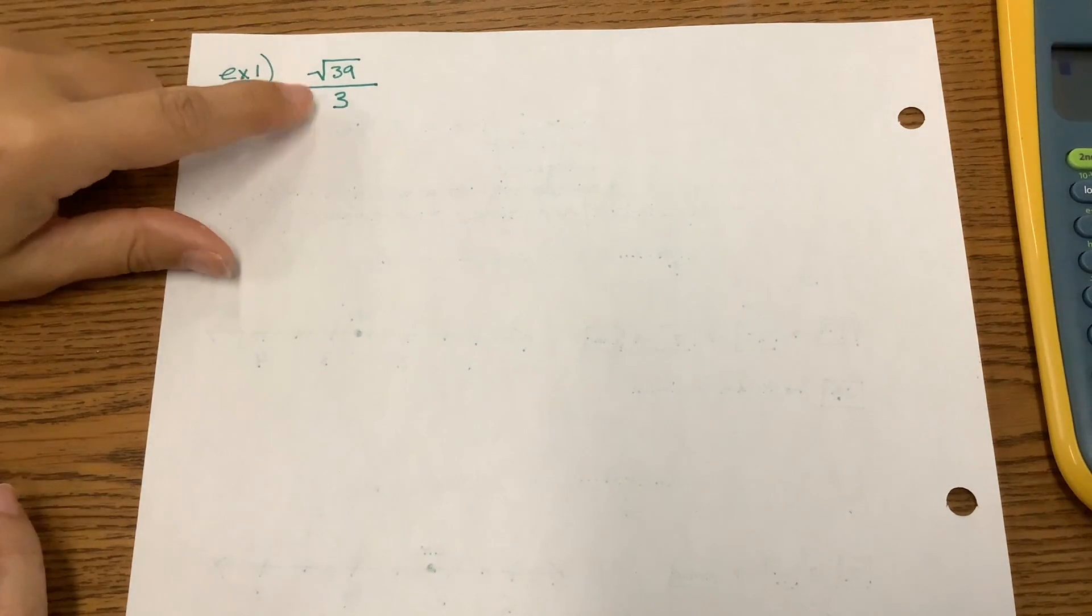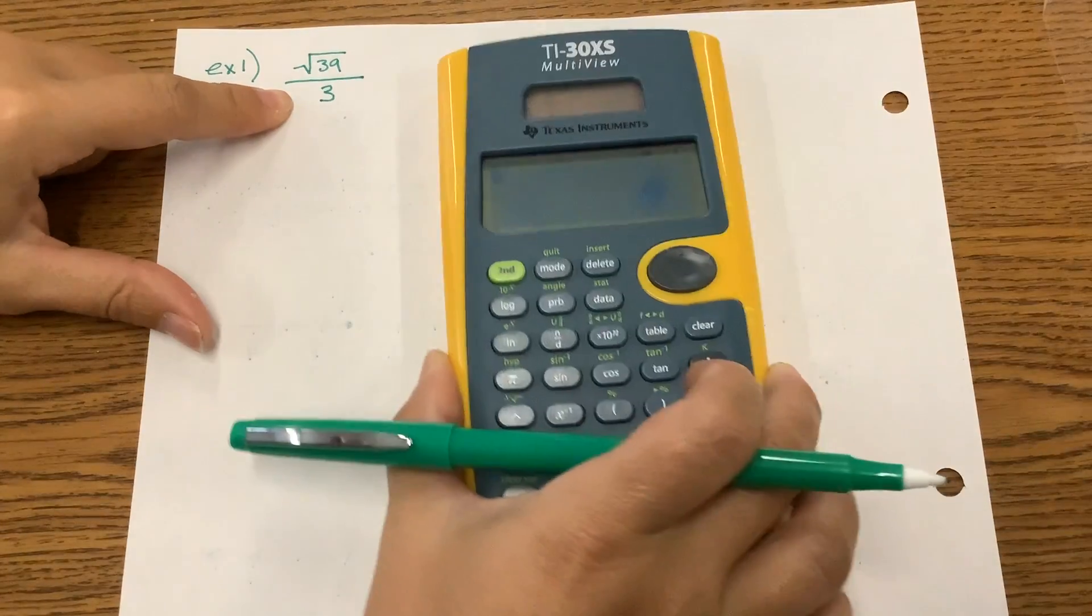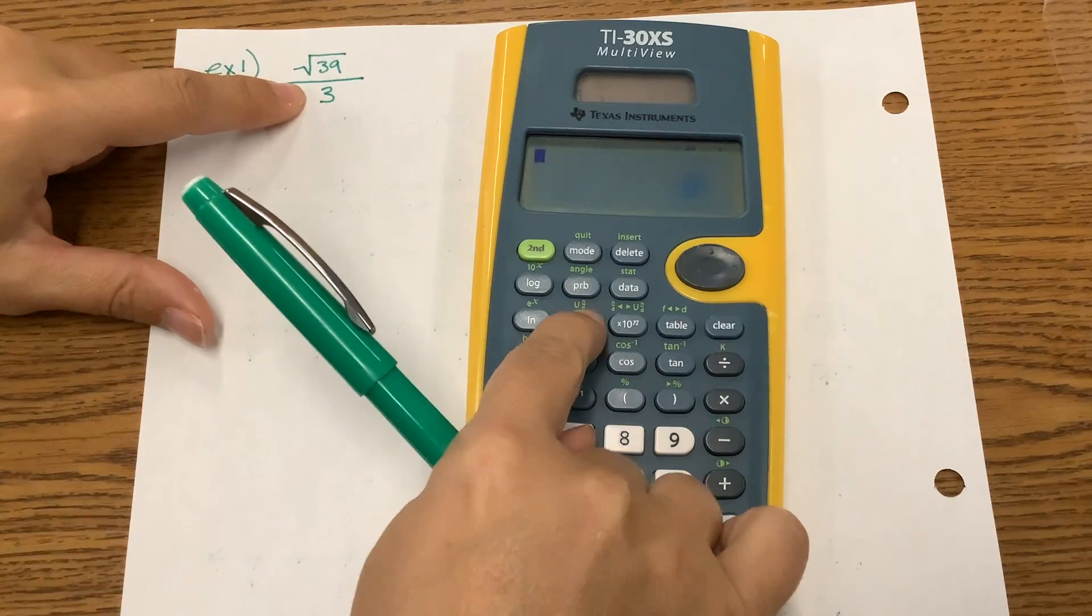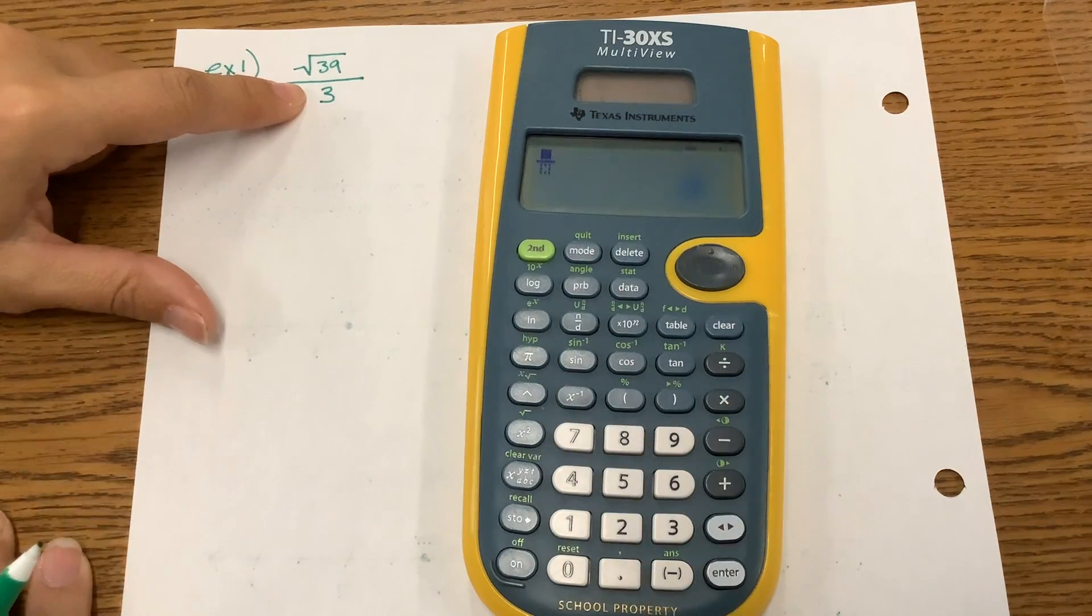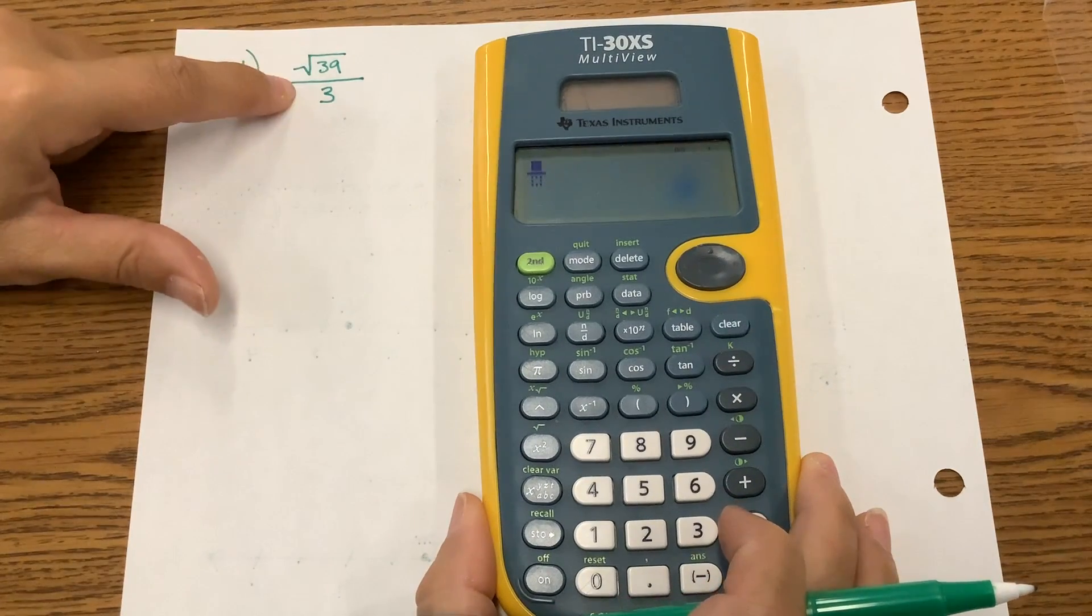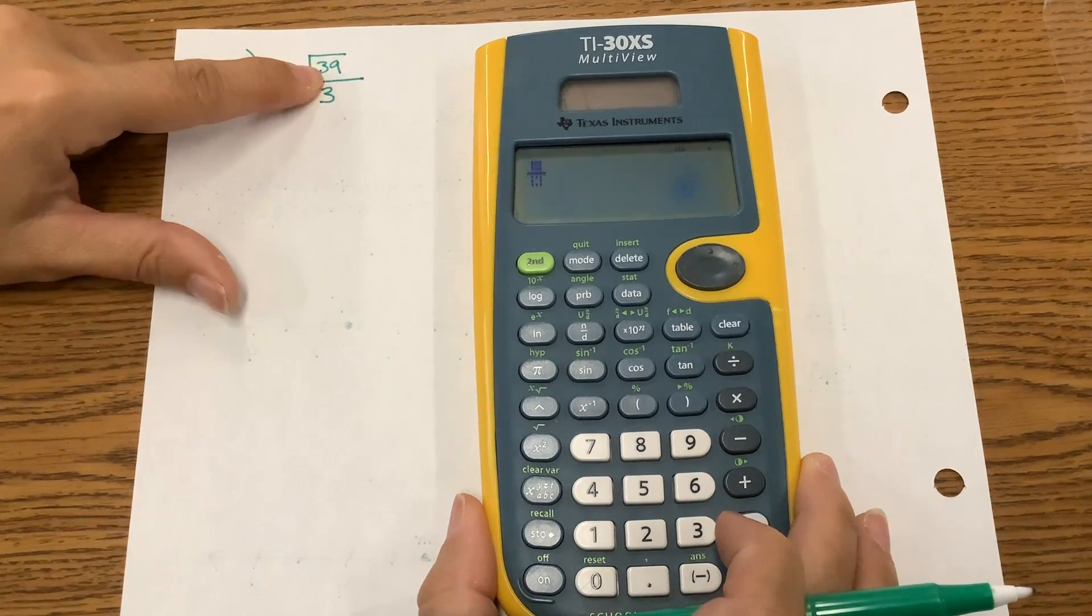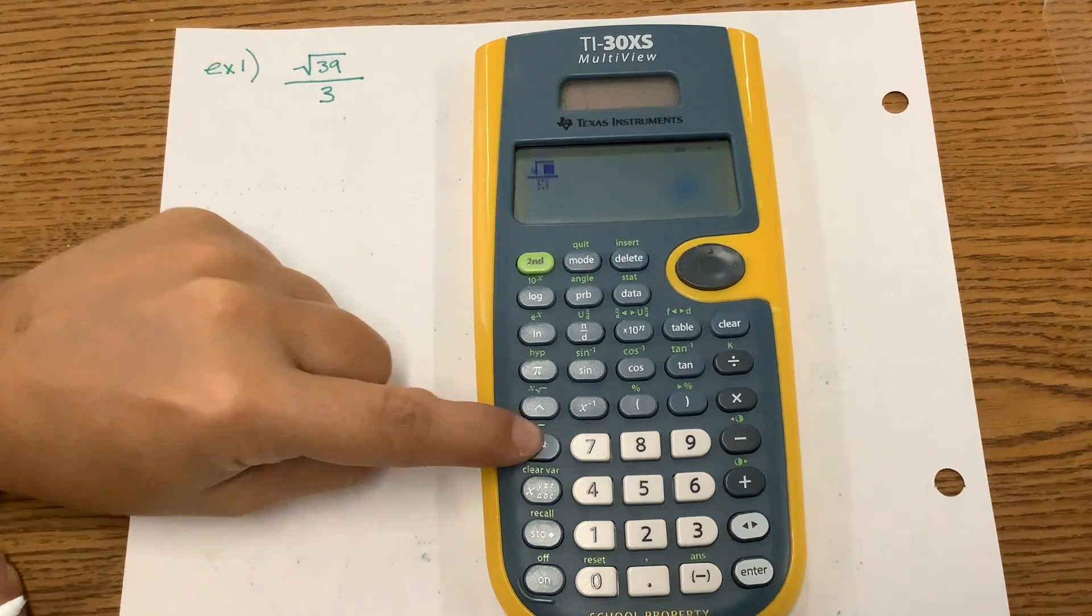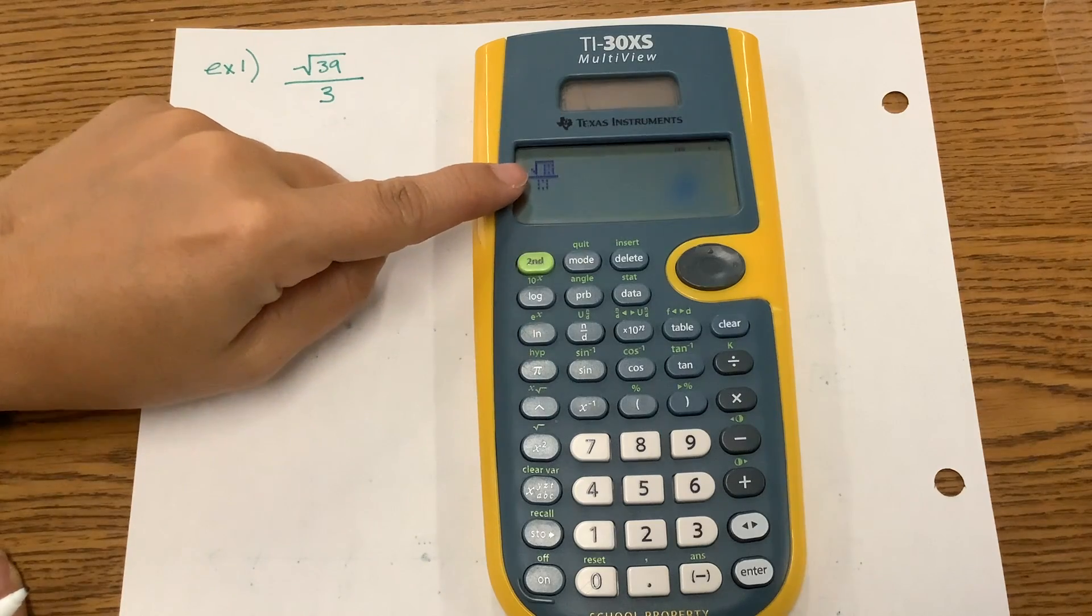So in order to find this decimal, we're going to evaluate it in our calculator. Since it's in fraction form, go ahead and press your fraction button. That's n over d. Then we're going to press in the numerator the square root of 39. Remember, for the square root, you press second and x squared. So now we have that root symbol on the top.